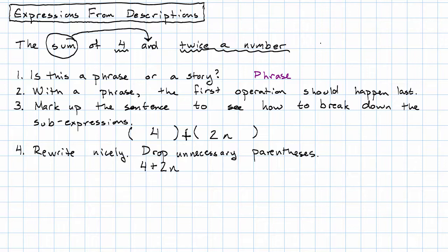So I'll just have four plus two N for my expression. The sum of four and twice a number, that's four plus two N. Let's work through another example that is also a phrase.